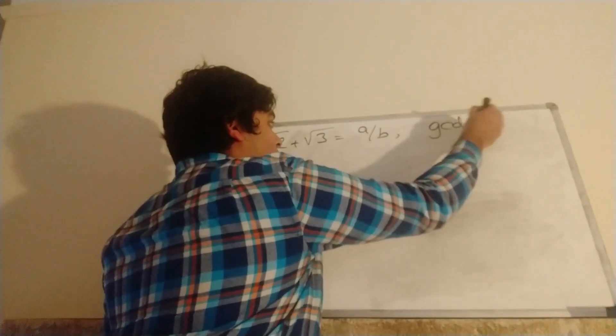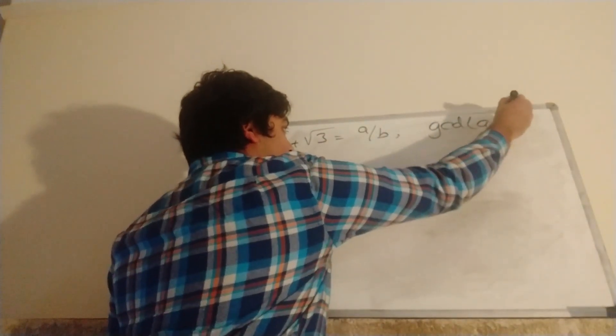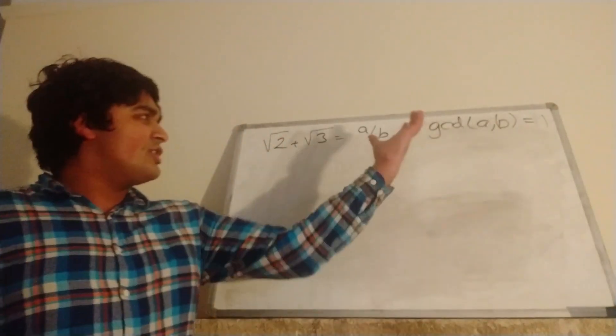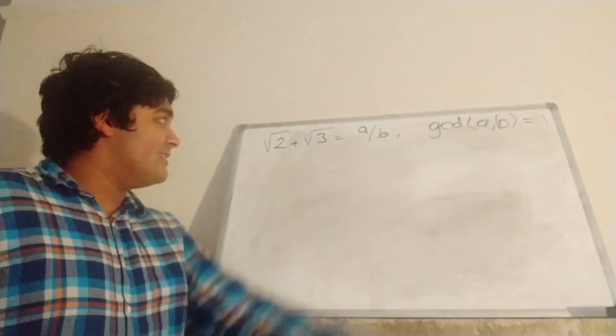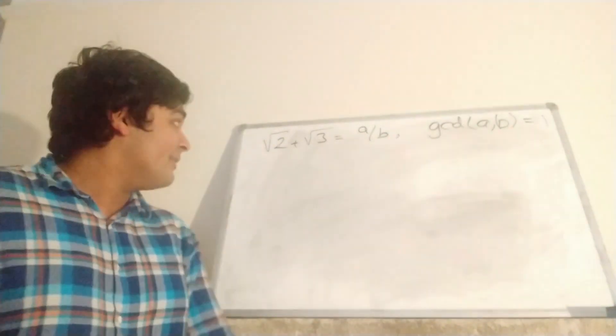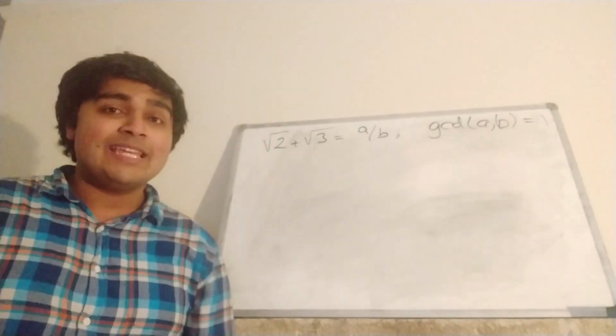But in particular, they're coprime. Because if they're not coprime, then we can just divide through the numerator and the denominator by any common factors, until we reach A and B that are coprime. So we have √2 + √3 = A/B.